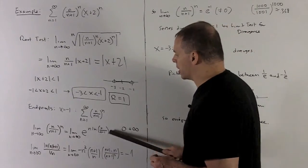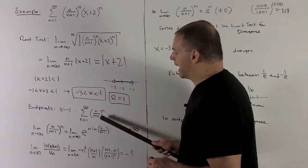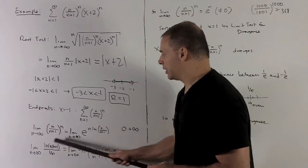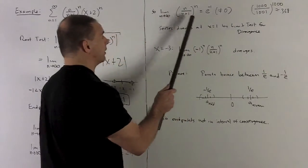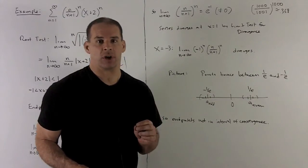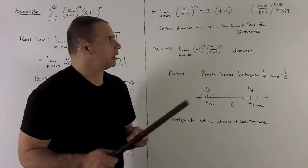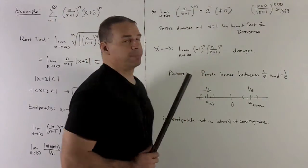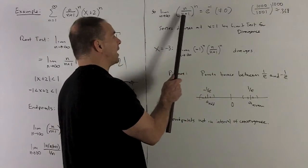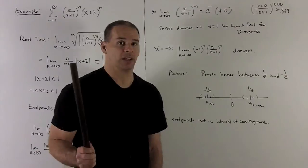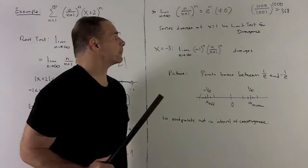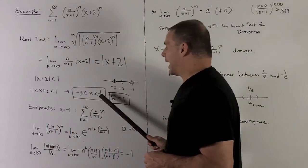That -1 is the exponent, so since e^x is continuous, we can take the limit to the exponent: the limit of our original sequence is e to the -1. That's not equal to 0, so the series diverges by the limit test for divergence. As a check: since we're doing limits out to infinity, just take a big number — plugging in 1,000 gives 1000/1001 to the thousandth power ≈ 0.368, which is indeed roughly 1/e. So x = -1 is not included in the interval of convergence.